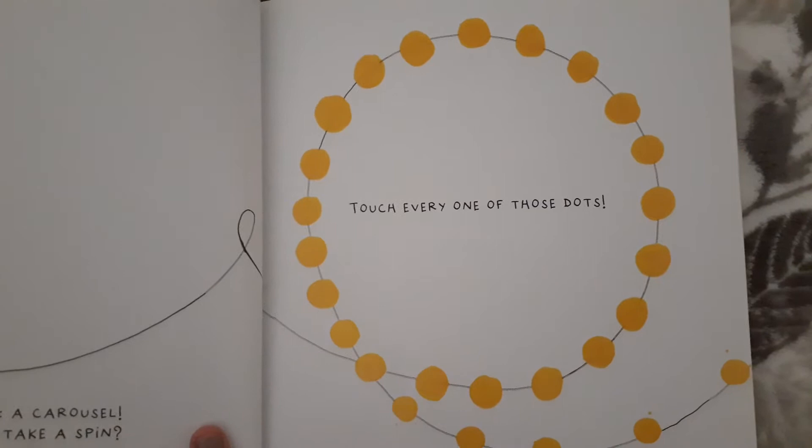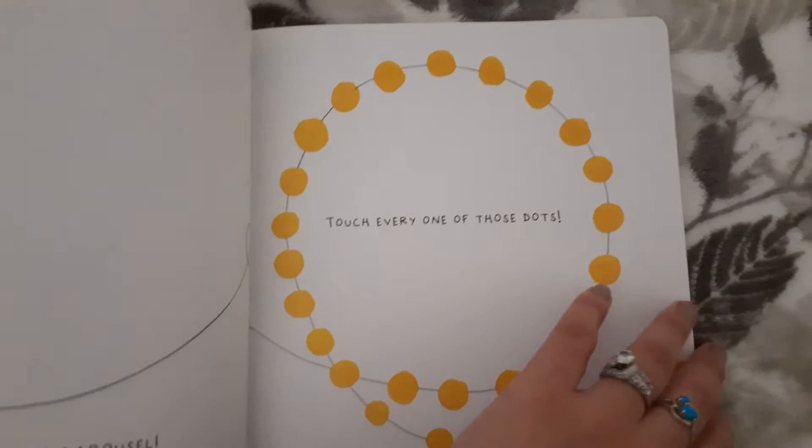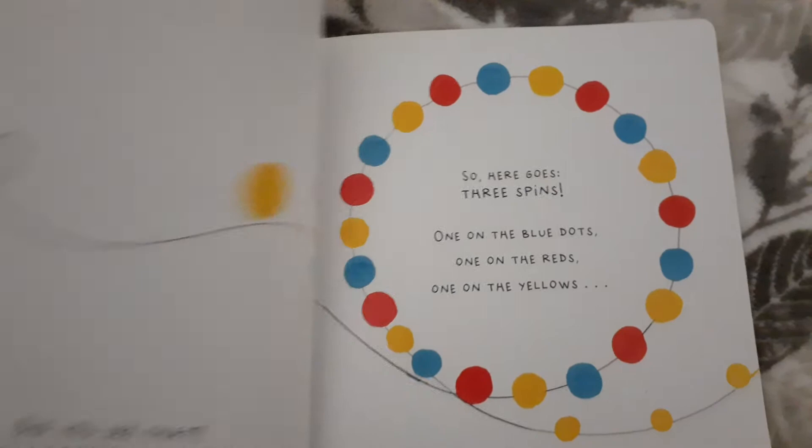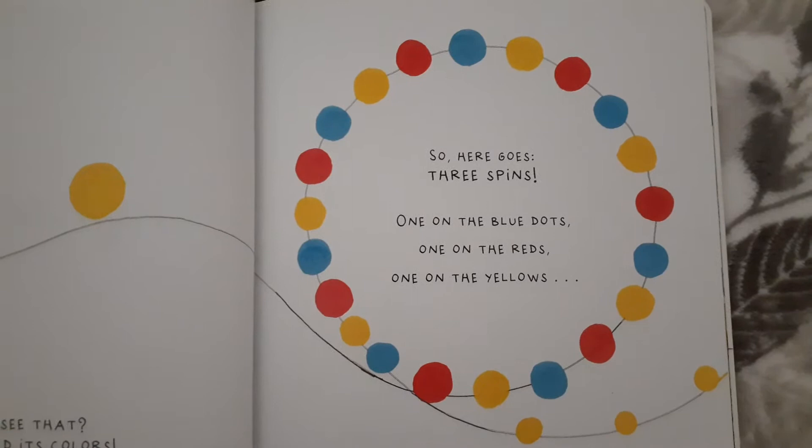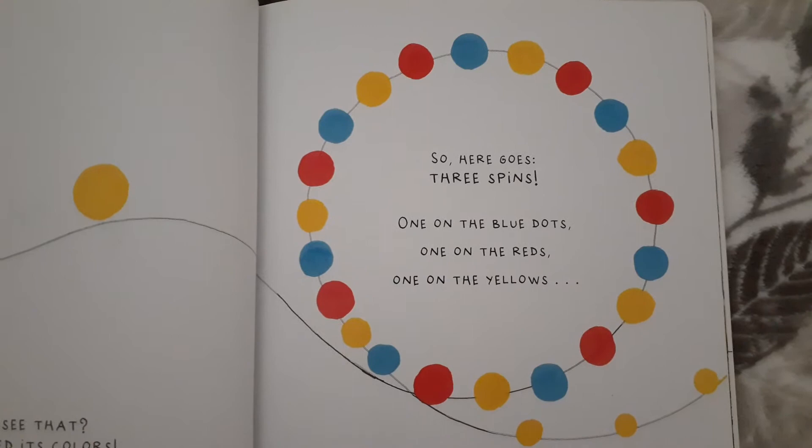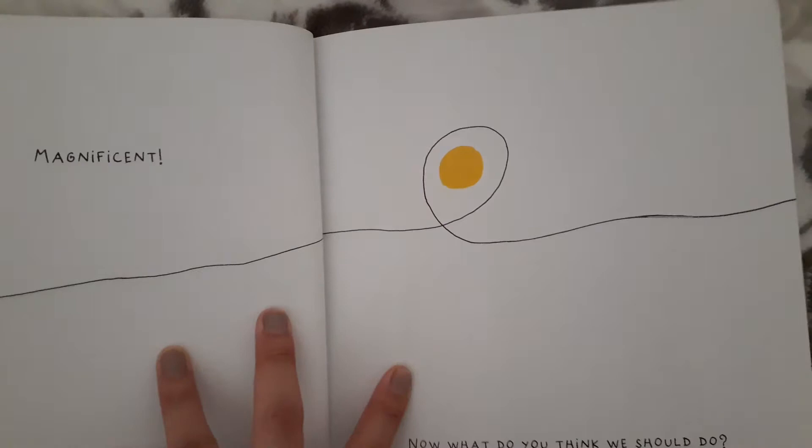Touch every one of those dots. So you can pause it here, friends. Did you see that? You changed this color. So here goes. Three spins. One on the blue dots. Spin the blue dots. One on the red. And one on the yellows. Magnificent. Good job.